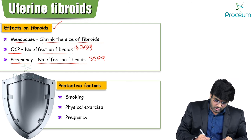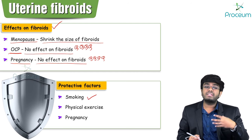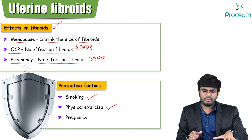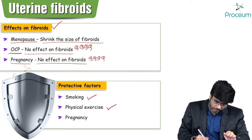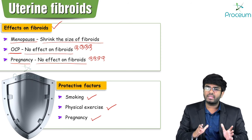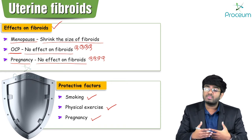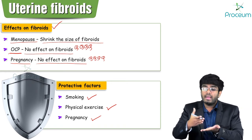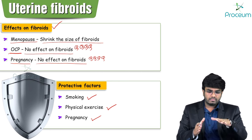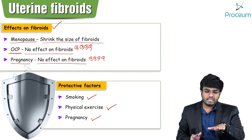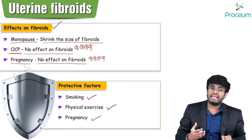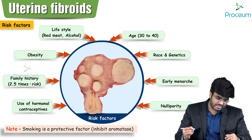Protective factors: smoking inhibits aromatase enzyme, preventing peripheral aromatization of androgens to estrogens. Physical exercise decreases adipose tissue, reducing peripheral aromatization. Pregnancy is also protective because nulliparous females are at risk — multiparous females have more pregnancies, providing more months of gestational and lactational amenorrhea with decreased estrogenic stimulation of the uterus. Additional protective factors include a healthy diet.